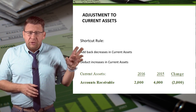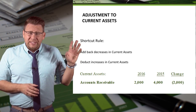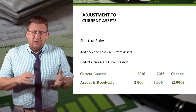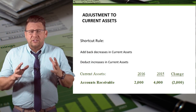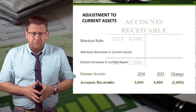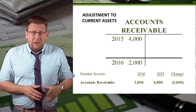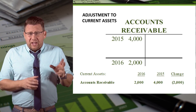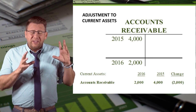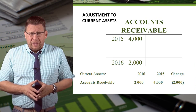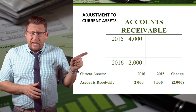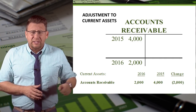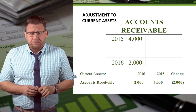Let's review the example where accounts receivable decreased from $4,000 to $2,000. Another way to look at this account is with the T-account format. You can see the beginning balance is $4,000 and the ending balance is $2,000.